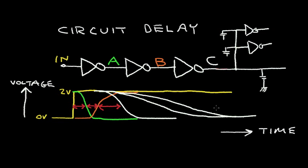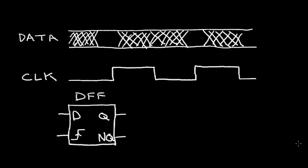So now let's start to take a look at the D flip-flop. Here I've shown two signals: at the top, I've shown a data signal, and below that, I show a clock signal. And below that, I show the symbol for the DFF. This data signal here is the input to the D flip-flop, and this clock signal is this input.